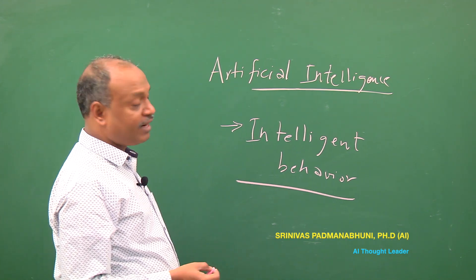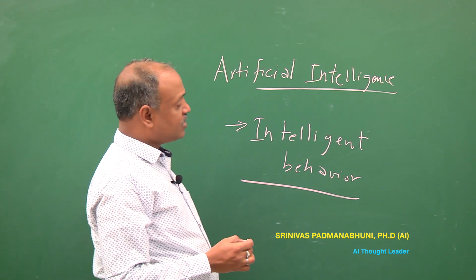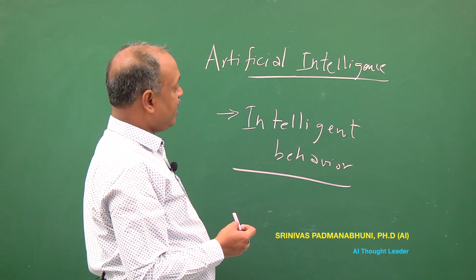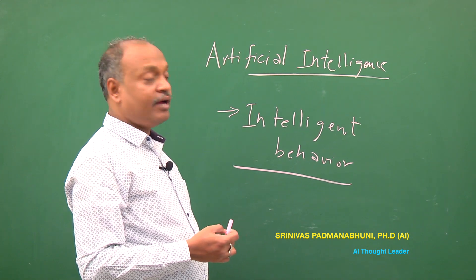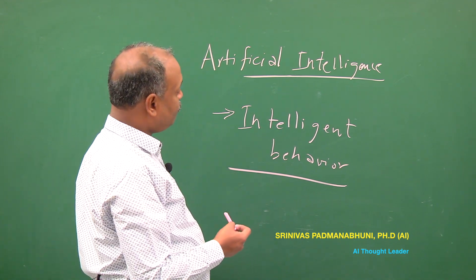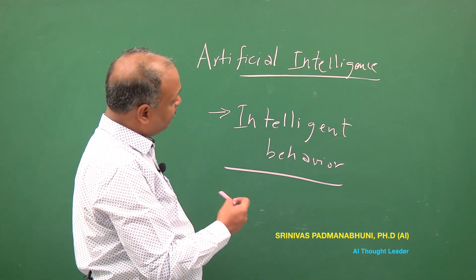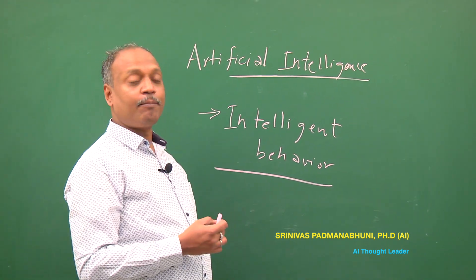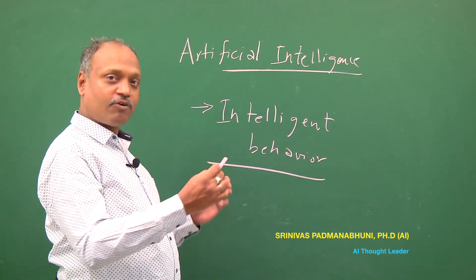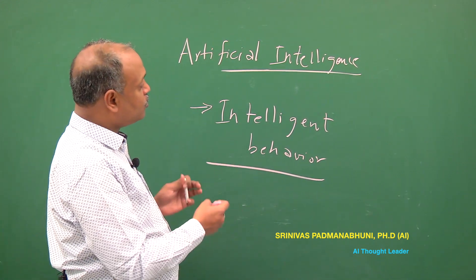Let us dissect this notion of intelligent behavior as endowed in a machine. To start with, we need to understand that it needs to display intelligence in the form of reasoning — by virtue of the way humans reason and work with different kinds of knowledge. It could be in the form of generalizing from a lot of simple examples to form a generic rule.